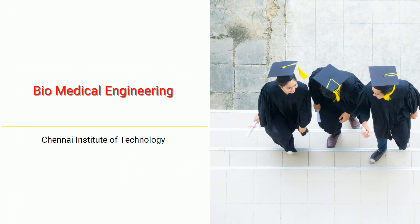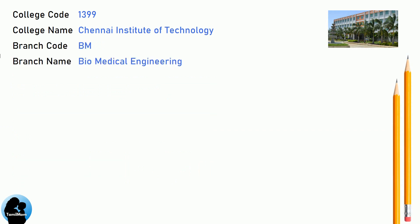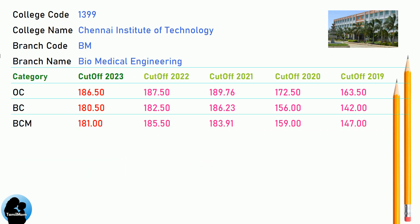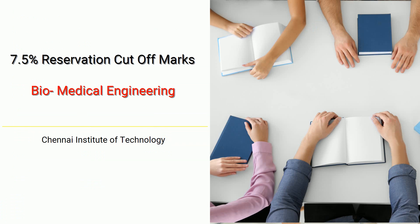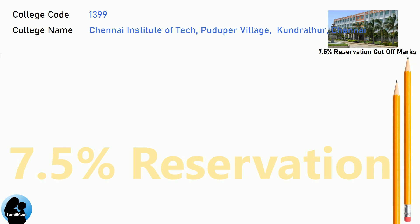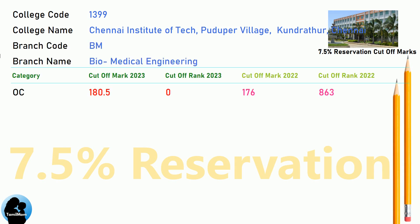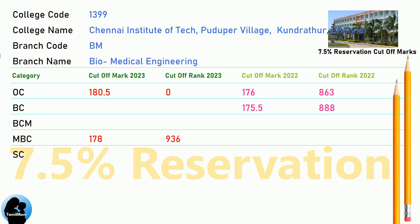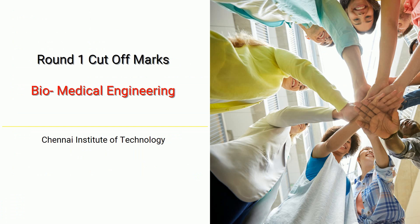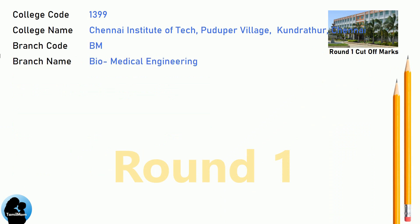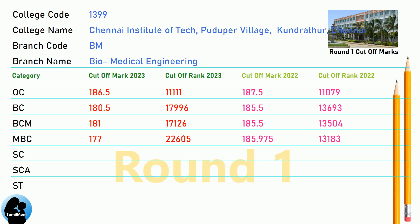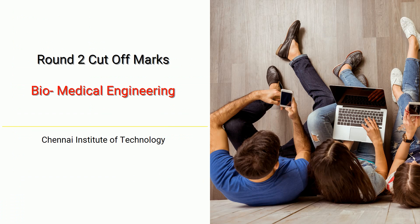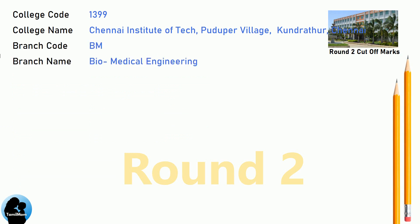DNA Cut-off for Chennai Institute of Technology in Biomedical Engineering. DNA 7.5 Reservation Cut-off for Chennai Institute of Technology in Biomedical Engineering. DNA Round 1 Cut-off for Chennai Institute of Technology in Biomedical Engineering. DNA Round 2 Cut-off for Chennai Institute of Technology in Biomedical Engineering.